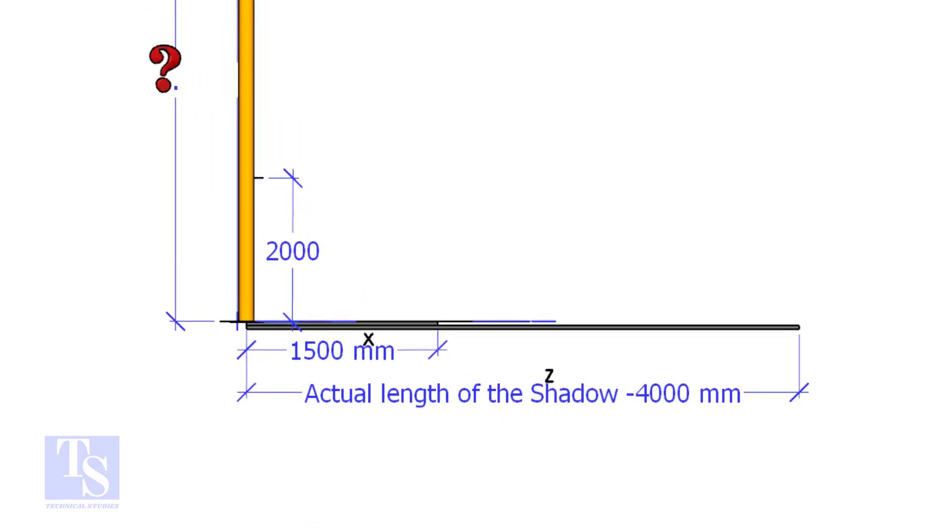Try another example. Assume the shadow length of the pole is 4000mm, and the object shadow length X is 1500mm.